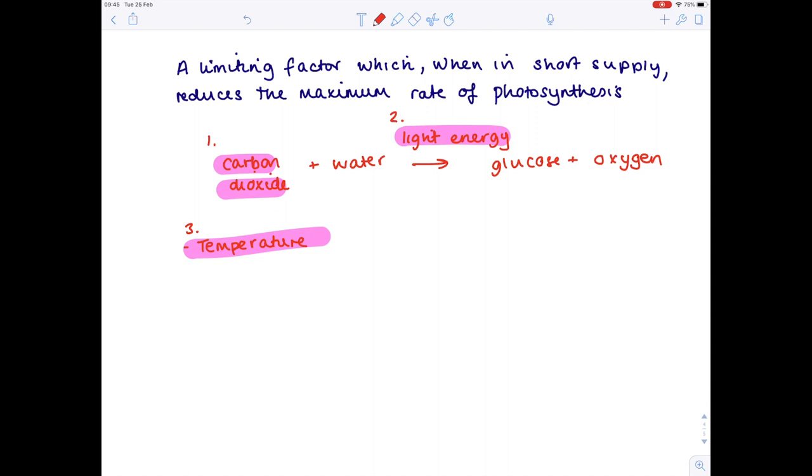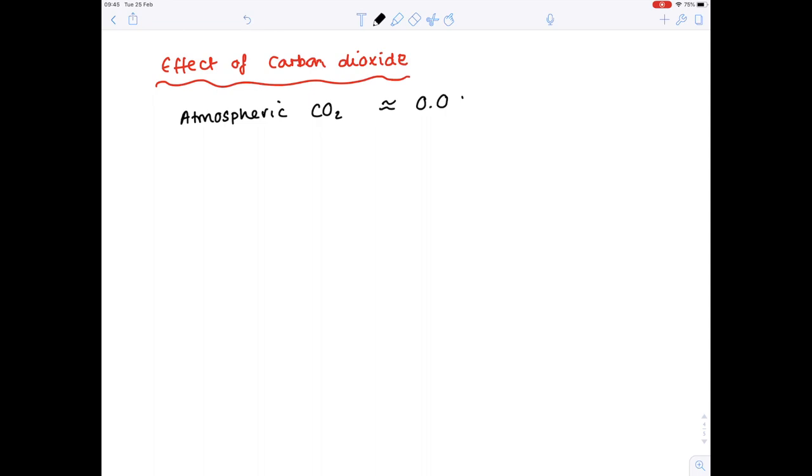We're now going to have a look at each of these in turn in detail. In terms of how much carbon dioxide there is in the atmosphere, it's around 0.04%. Now below 0.01% carbon dioxide, remember there's a very important enzyme known as rubisco which is involved in photosynthesis, and that rubisco cannot fix carbon dioxide below 0.01% carbon dioxide in the atmosphere.